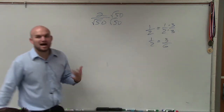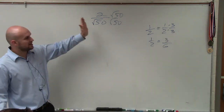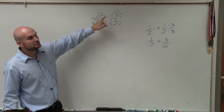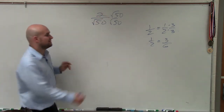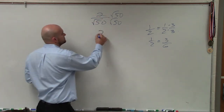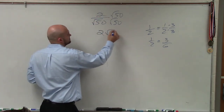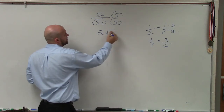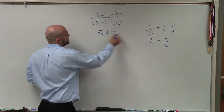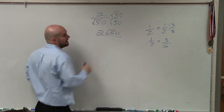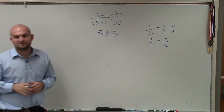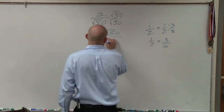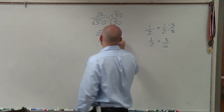Now let's multiply across. 2 times square root of 50 on the top, and square root of 50 times square root of 50 — which would be the square root of 2,500 — on the bottom.